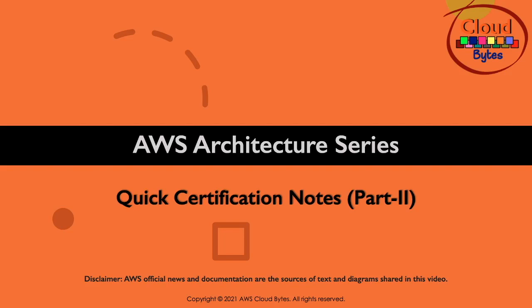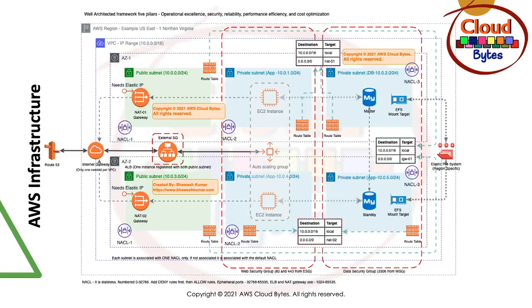Welcome to the AWS Architecture Series. This is part two of quick certification notes, and we are going to discuss a picture of AWS Infrastructure where we will discuss the common building blocks of AWS Cloud. I prepared this slide for an easy understanding of how and what each service means and where it sits in the overall infrastructure. This is very much 101 of AWS Cloud.